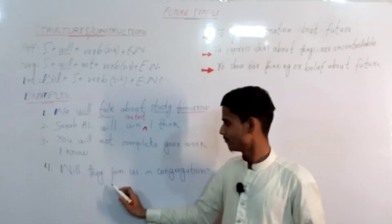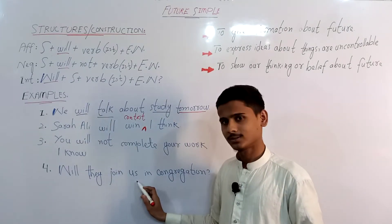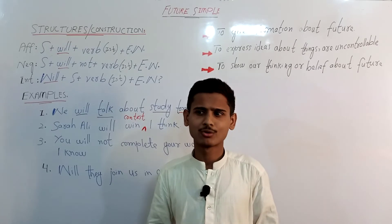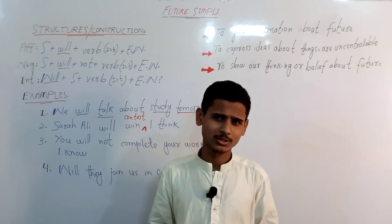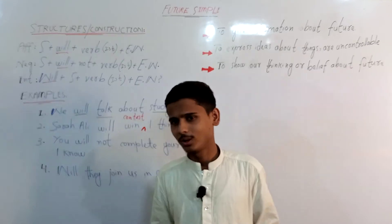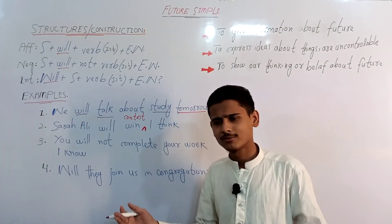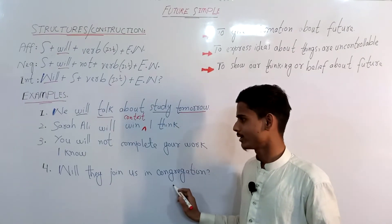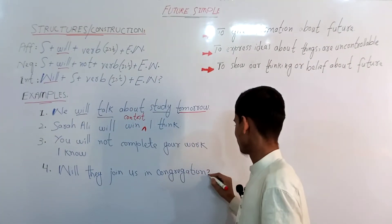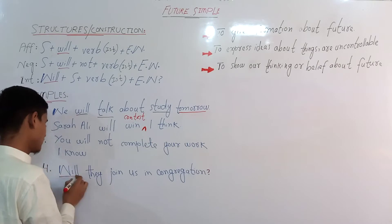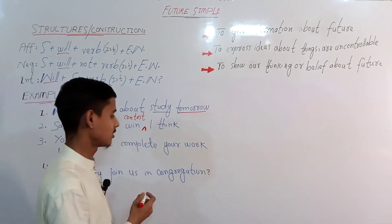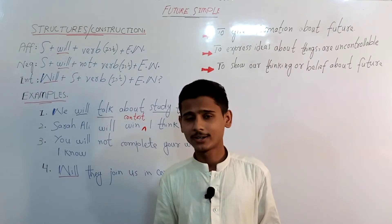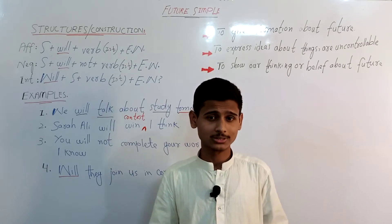Now the interrogative example: 'Will they join us in congregation?' — 'congregation' meaning a group of people gathered for a religious activity or ceremony. Here we have begun the sentence with the helping verb 'will', which means we are confirming something — this is a confirmative question. I hope you understand. That covers the basics for beginners, intermediate, and elementary students.